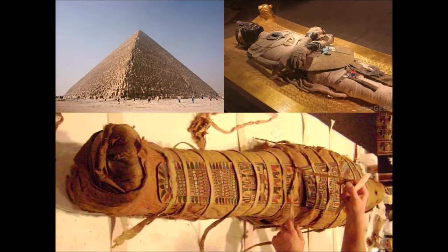Mummies of Egypt. The body was filled with sawdust, wrapped with strips of linen cloth, and covered with a cloth.